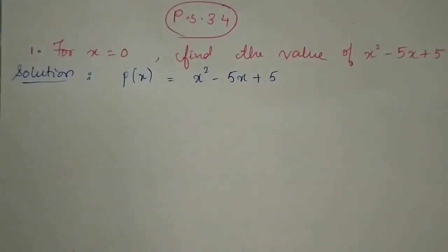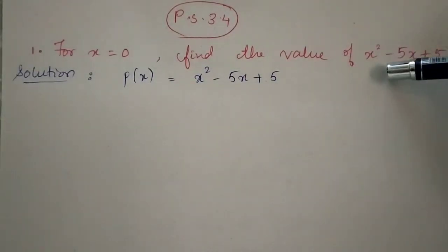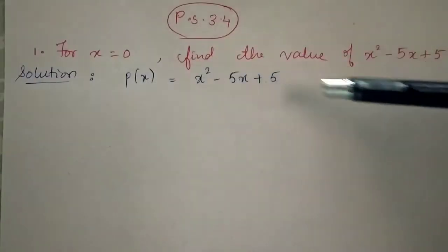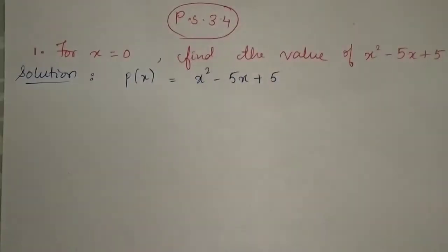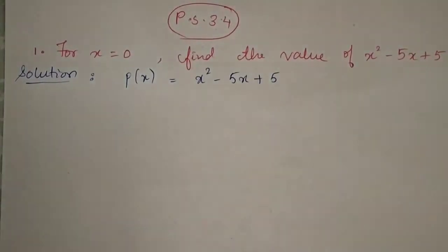The first step is to write down the polynomial using p(x) notation — small p, with x in the bracket, because x is the variable. If the variable were m, we would write p(m); if it were y, we would write p(y). So p(x) is equal to x squared minus 5x plus 5.